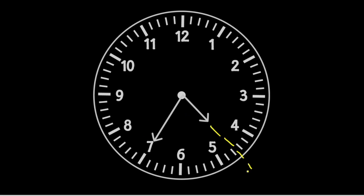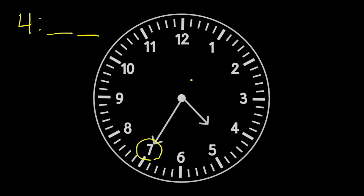Here's our time. The hour hand is past the four but not yet on the five, so it's four-something. Now we look at the minute hand. Remember, each number on the face of the clock stands for five minutes. The minute hand points to the seven — that's seven fives. We can skip count by five, seven times.